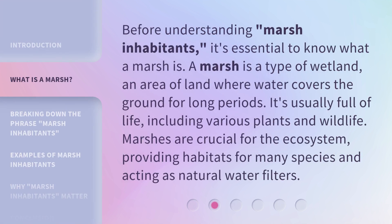Before understanding Marsh Inhabitants, it's essential to know what a marsh is. A marsh is a type of wetland — an area of land where water covers the ground for long periods. It's usually full of life, including various plants and wildlife. Marshes are crucial for the ecosystem, providing habitats for many species and acting as natural water filters.